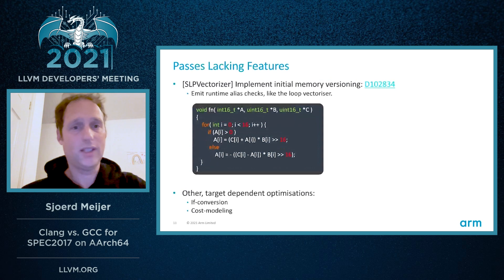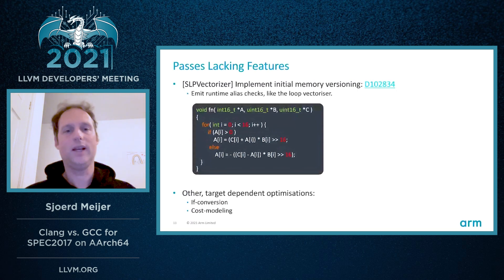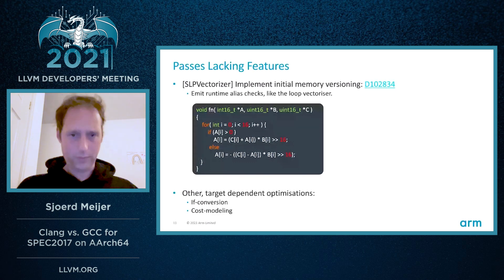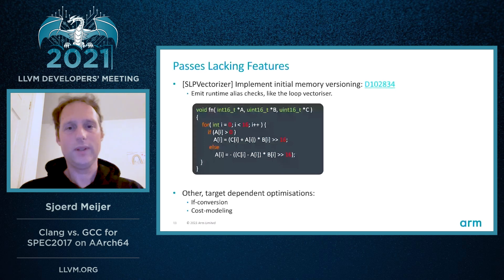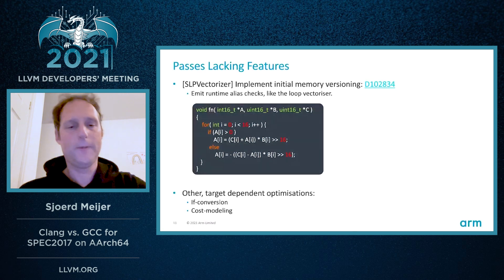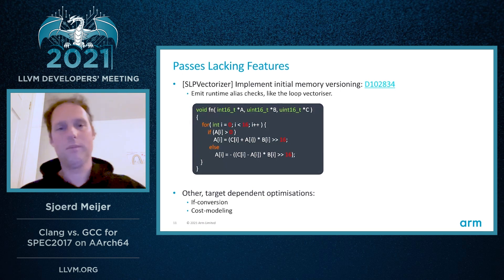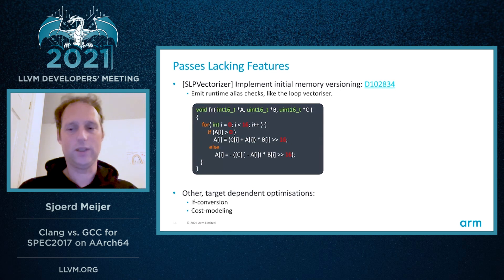Which brings us to passes lacking features: the SLP vectorizer is not able to emit runtime alias checks if it cannot statically determine whether memory overlaps or not, so it was not able to determine legality of the transformation and bailed. Florian is working on implementing initial memory versioning, and once that's in, it will unlock a whole lot of new optimization opportunities in the SLP vectorizer. We'll probably also need to look at if-conversion and cost modeling — this is a big missing feature to address the X264 gap.